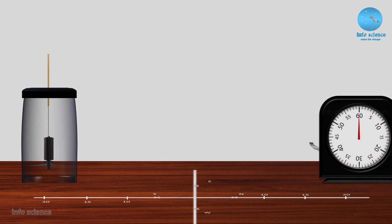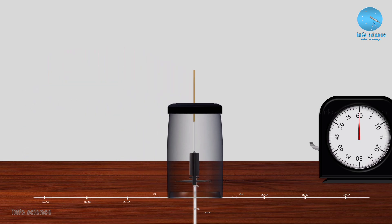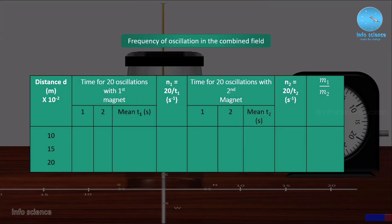We have the markings. The corner of the table is marked: north, east, west, south directions. Different lengths are marked. We are at the center point. That line joins the center. This is the frequency of oscillation in the combined field. We apply the 10 cm mark first and then arrange the magnetometer in place.